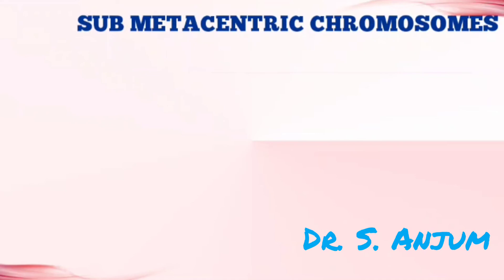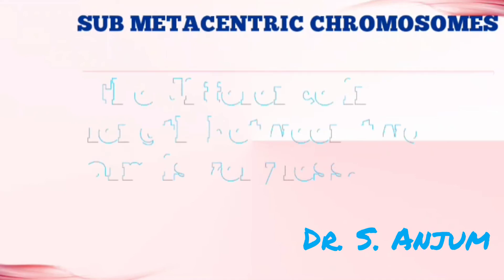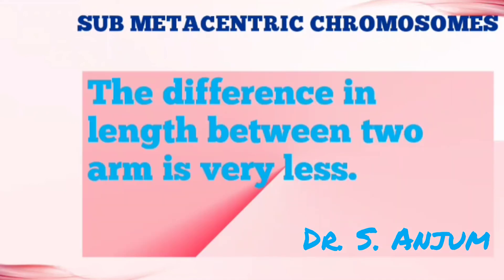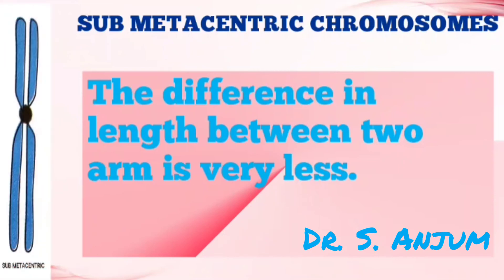In a sub-metacentric chromosome, the difference in length between the two arms is very small. The centromere is not at the center — it is slightly shifted to one end, so one part is slightly shorter compared to the other.